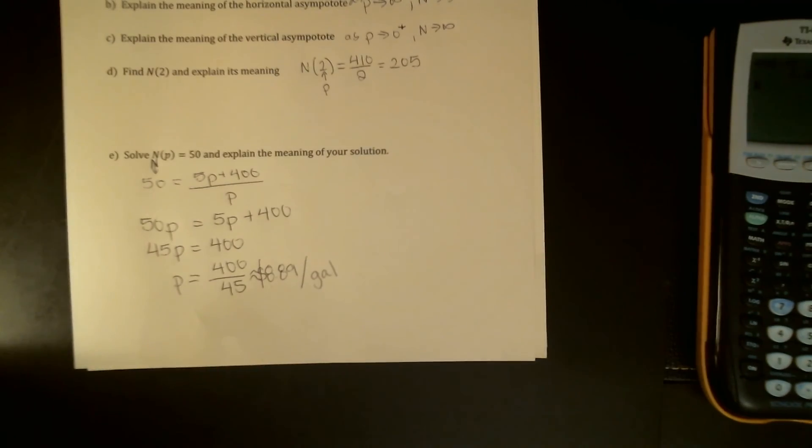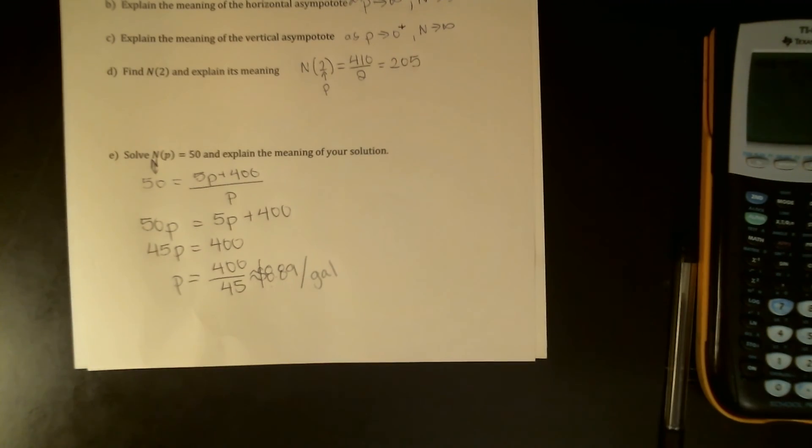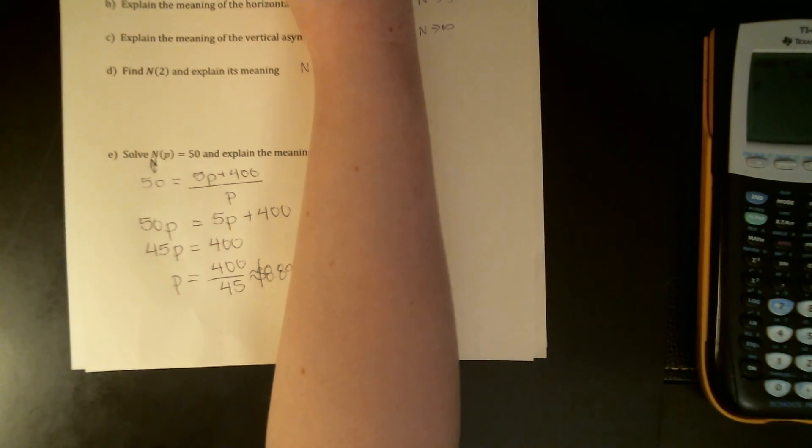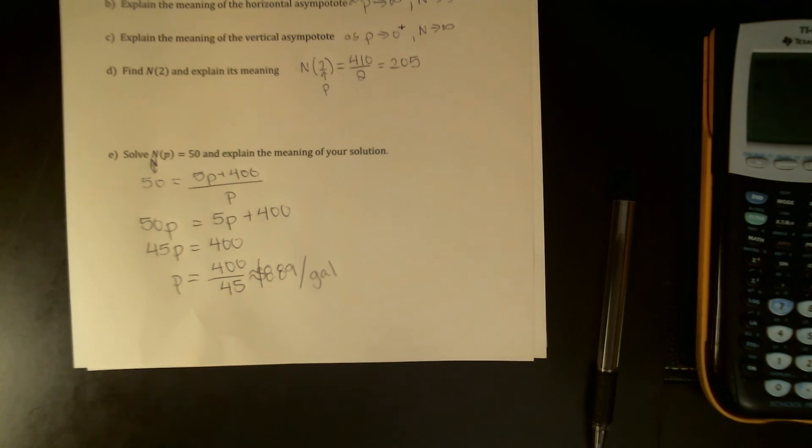So that's the idea of the word problems. You should be able to think about the meaning in particular of the vertical and horizontal asymptotes and make sure you realize that that's not just information about one variable. Even though I write it as n equals 5, it's also telling me something about p. This is what n does when p is really big. And p equals 0, the vertical asymptote is telling me about what n does when p is really close to 0. Hopefully that made sense. Thanks for watching.